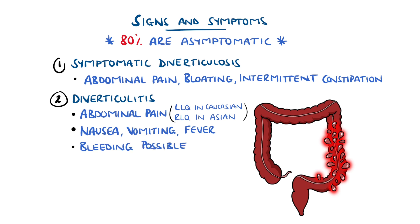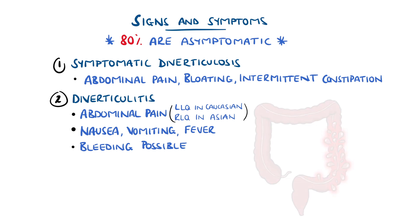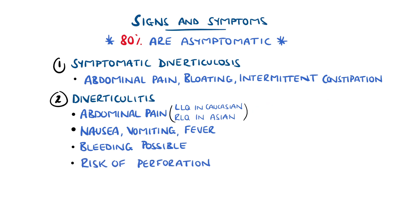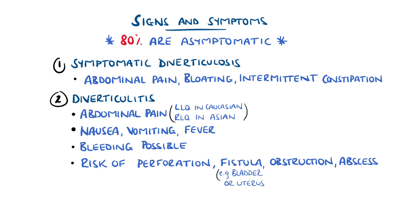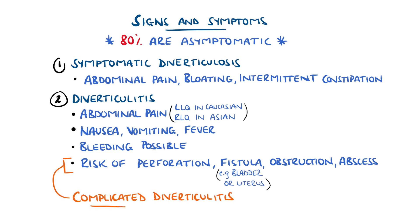The inflammation can also predispose to perforation and peritonitis, as well as fistula formation, such as to the bladder or to the uterus, as well as a risk of intestinal obstruction and abscess formation. Presence of these features would be called complicated diverticulitis.